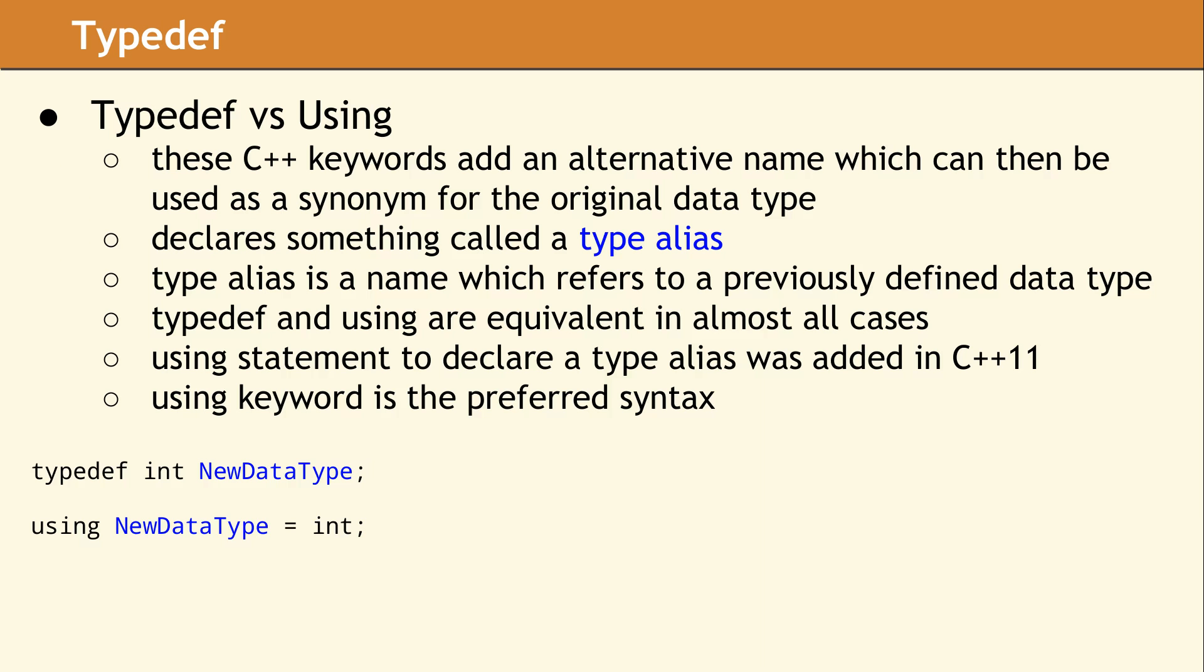The keyword typedef was a carryover from C and has been around for a very long time. The using keyword was already in C++98, but it had an unrelated meaning. The ability to declare a type alias with the using keyword was added in C++11.